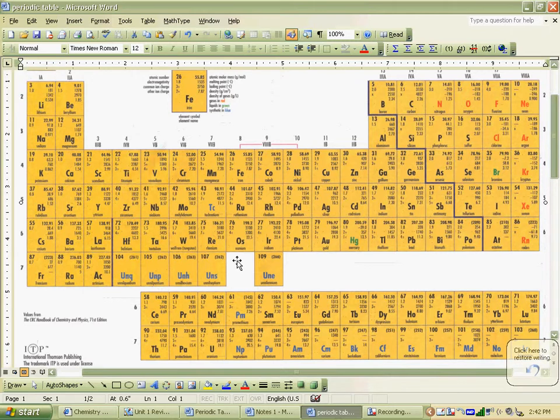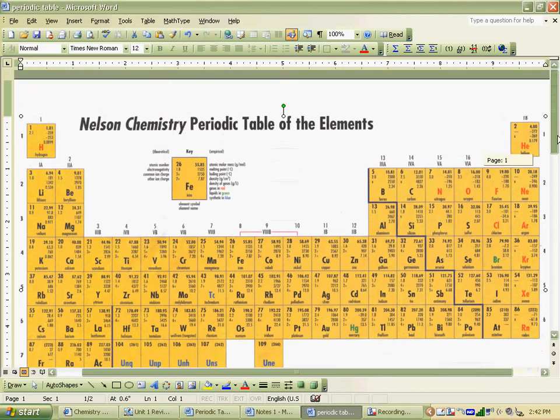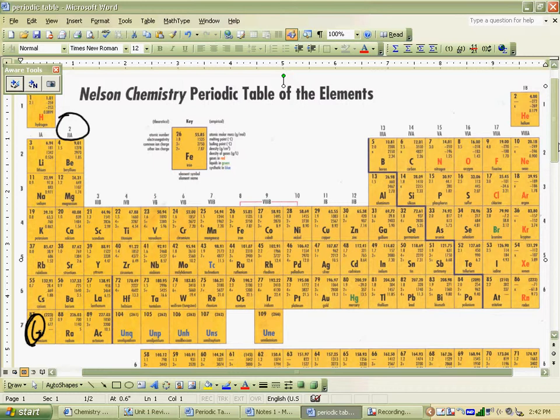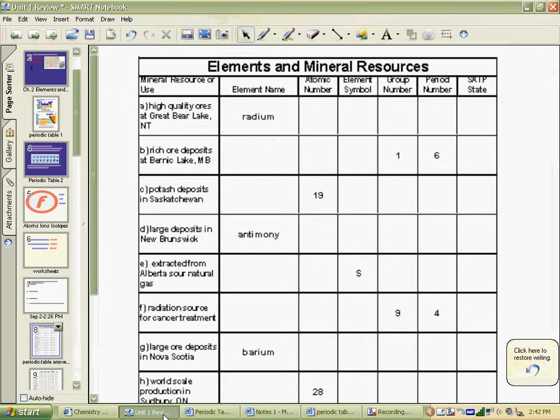So 88 is the atomic number for radium. And it is in group two. It's in the second column. And it's in period seven. My board's out of alignment. So group two, period seven, and the atomic number is 88. Element symbol is Ra. The group number was two. That's the column. The period was period seven.